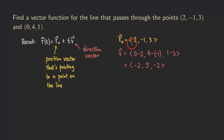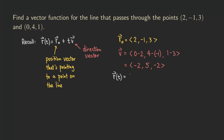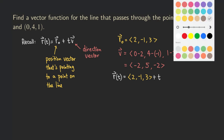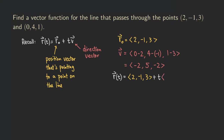Now we have both the direction vector and the position vector pointing to a point on the line. So we can write down the function: R(t) equals, with R₀ given as ⟨2, negative 1, 3⟩, plus T times the direction vector, which is ⟨negative 2, 5, negative 2⟩.